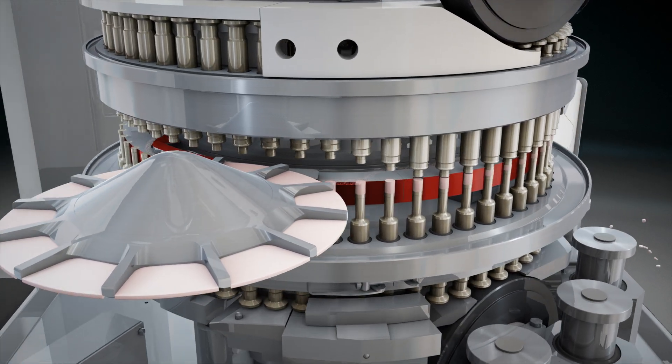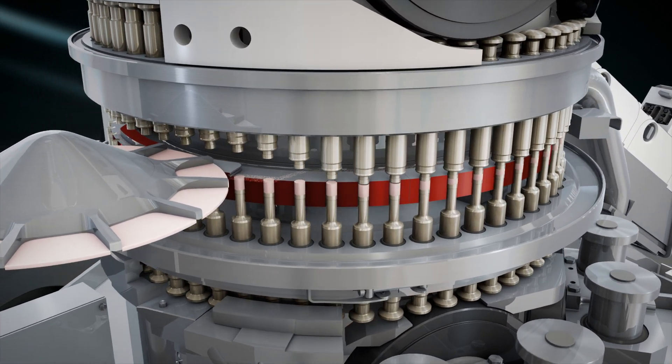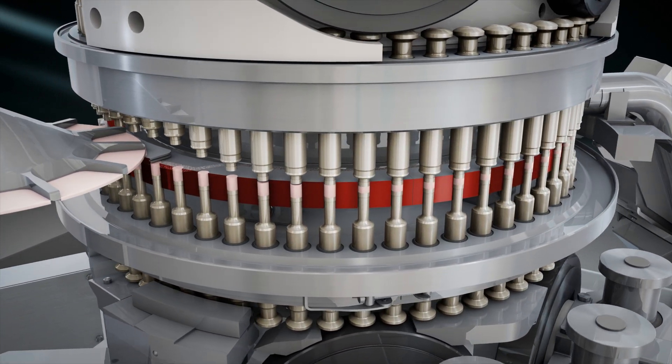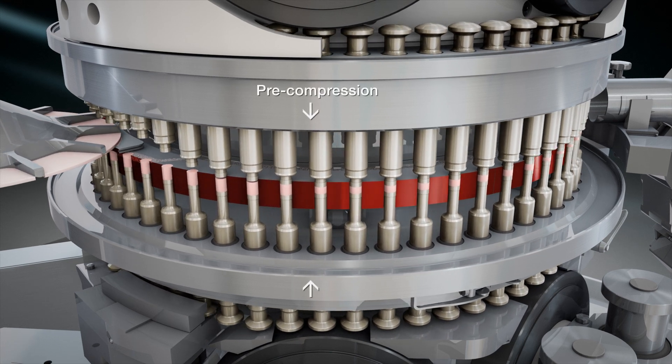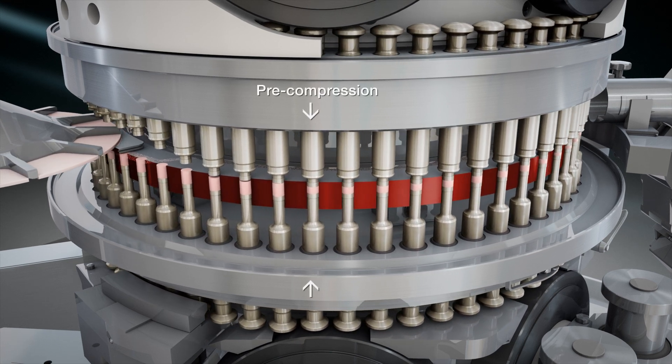After the dosing, the material is pre-compressed. At the pre-compression station, the upper and lower punches move together and vent the air from the material.